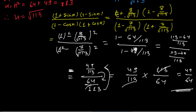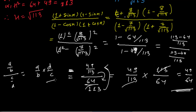Just to clarify the division step: the formula used is (A/B) ÷ (C/D) = (A/B) × (D/C). Keep this formula in mind.